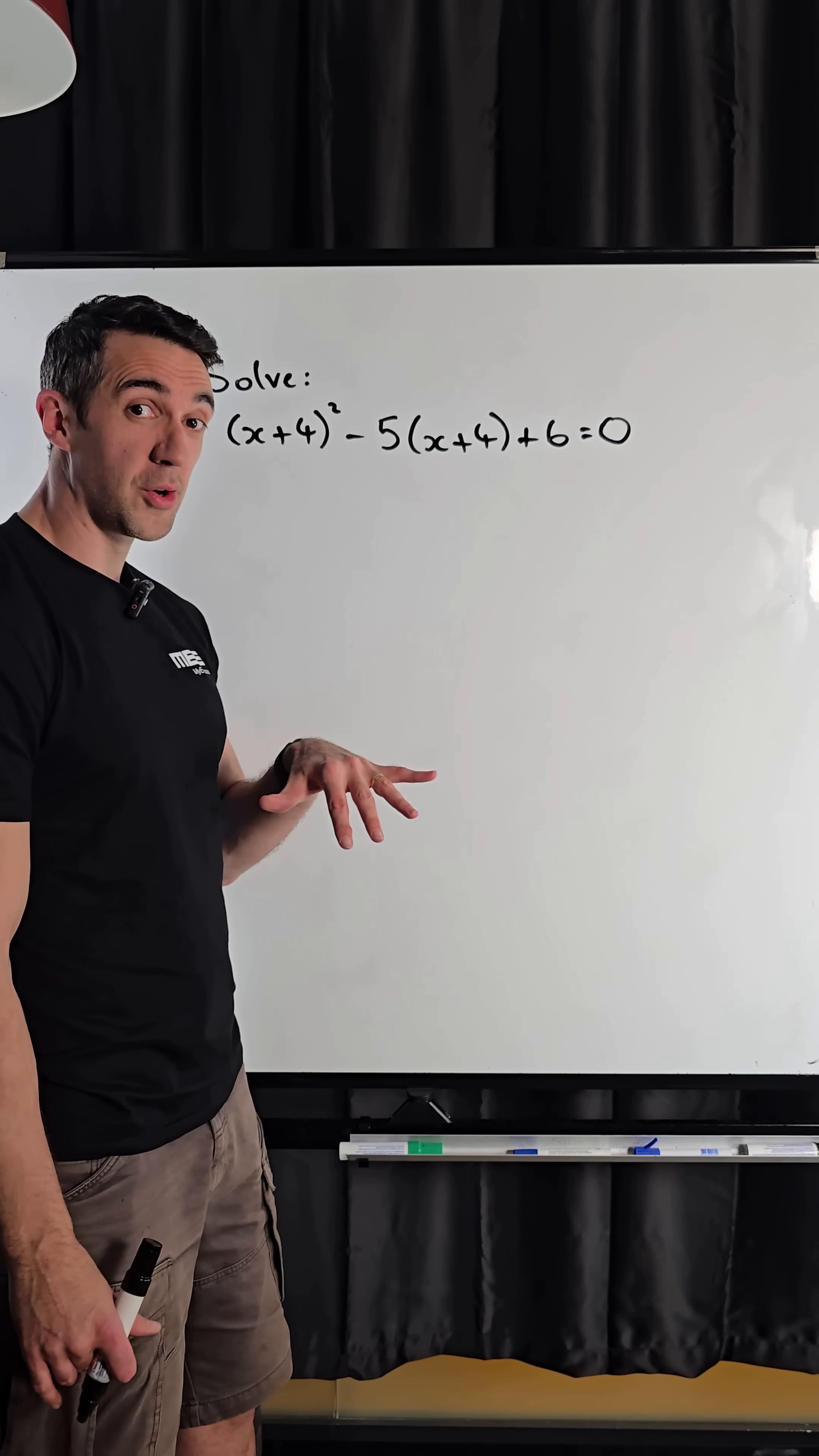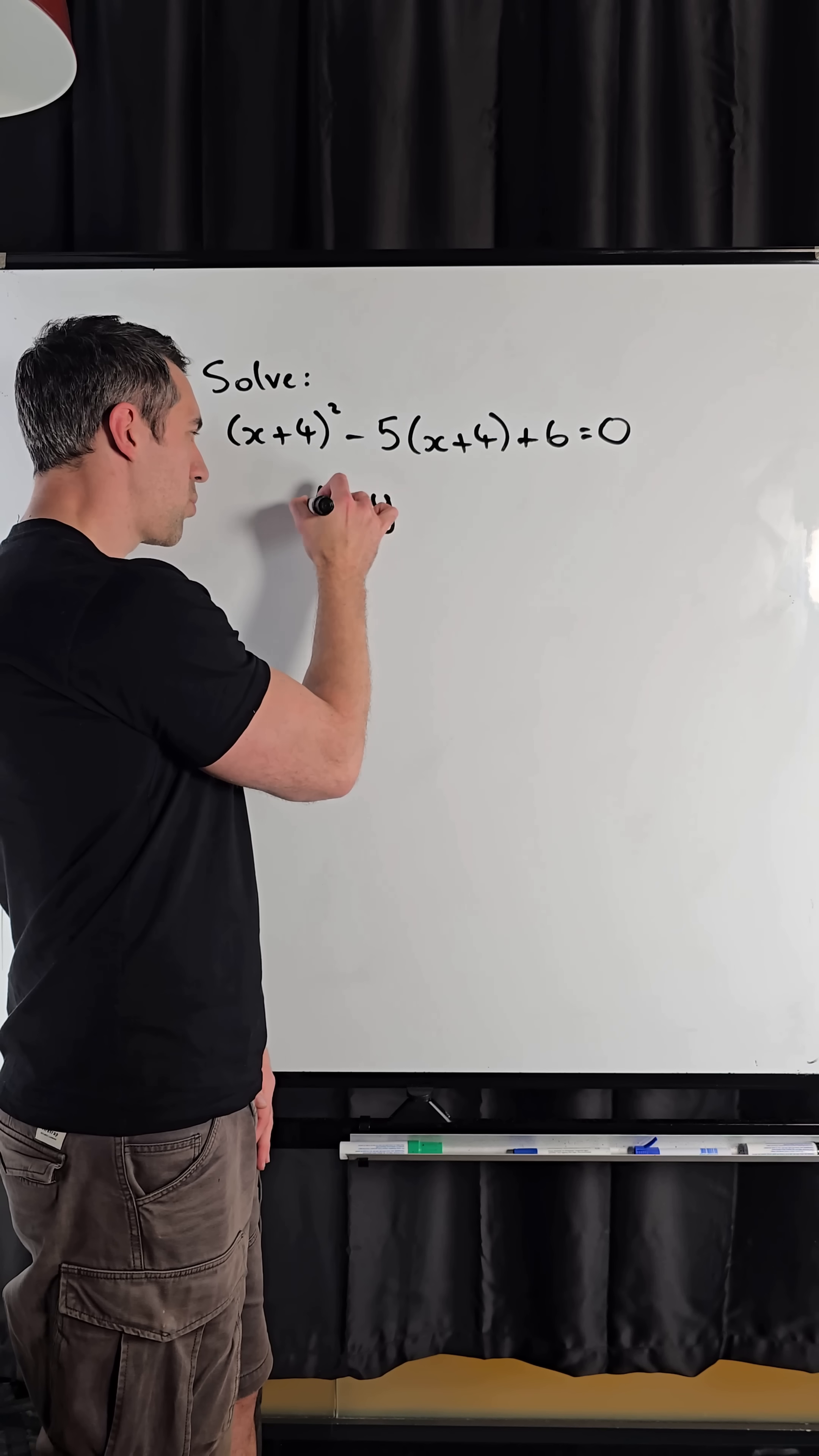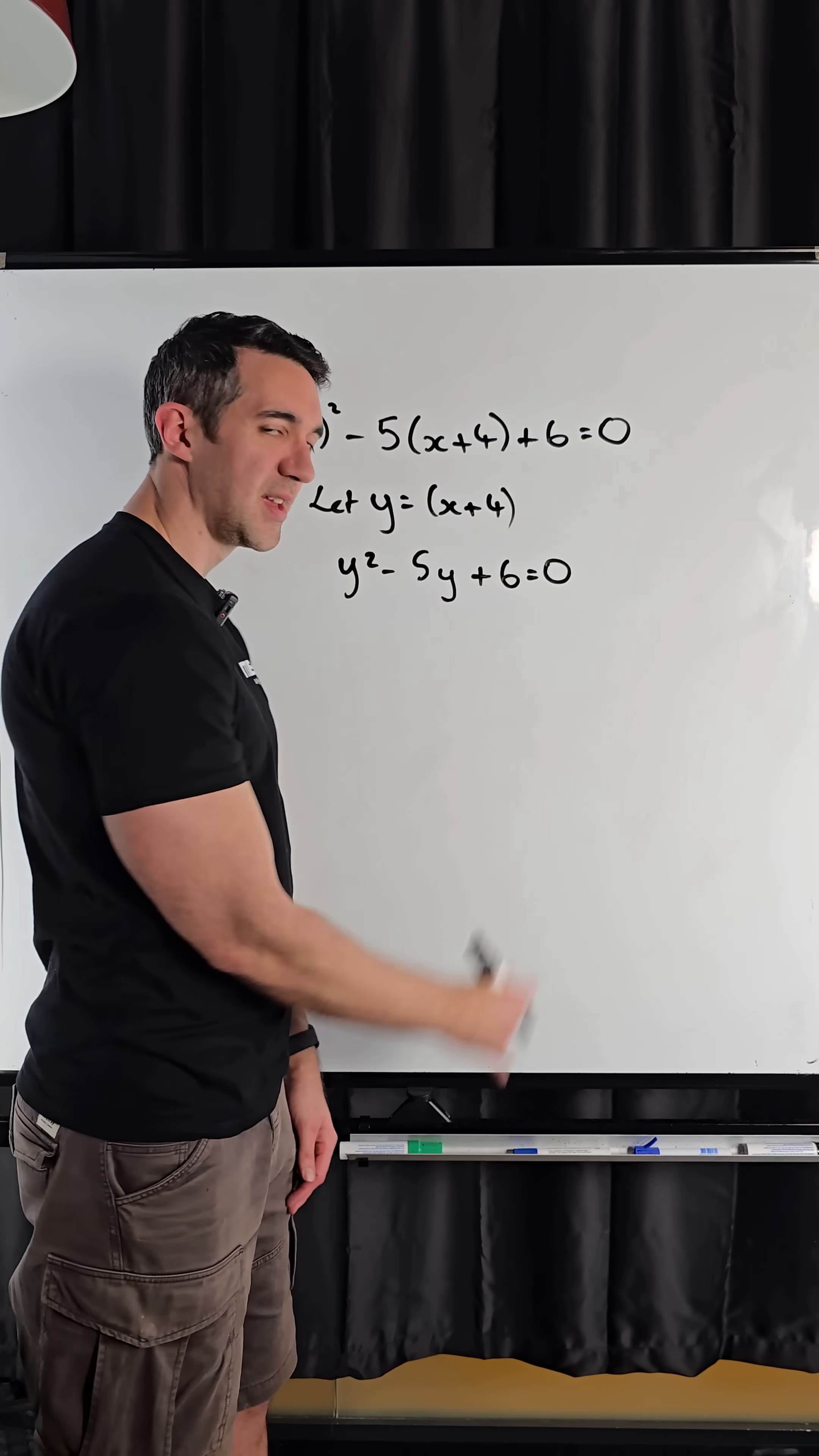So if you have another look, you might spot we've already got a quadratic equation, right? So if I make a substitution to show you and say let y equal x plus 4, I could now rewrite this as y squared minus 5y plus 6 equals 0.